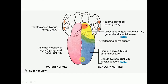All the muscles of the tongue are supplied by the hypoglossal nerve, that is cranial nerve number 12, except the palatoglossus muscle, which is supplied by the cranial accessory nerve via the vagus nerve — that is the vago-accessory complex or pharyngeal plexus of nerves.